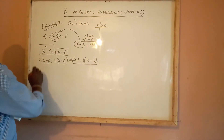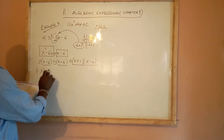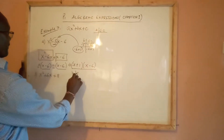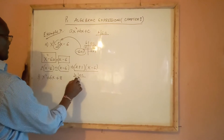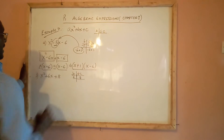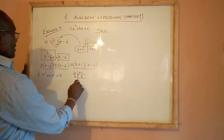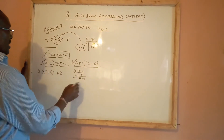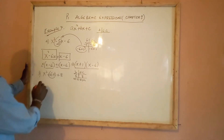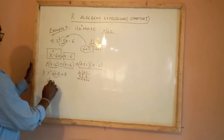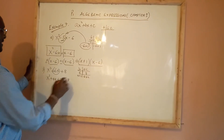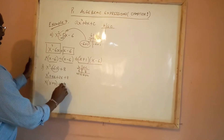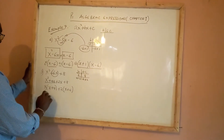Part b is x squared plus 6x plus 8. Using the same approach: b is 6 and ac is 8. We need two numbers that multiply to 8 and add to 6 — that is 4 and 2. We substitute the middle term and write x squared plus 4x plus 2x plus 8. In the first two terms x is common giving x(x plus 4), and in the last two terms 2 is common giving 2(x plus 4).